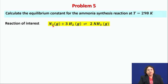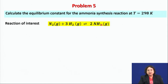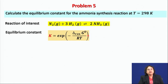The reaction is written as: 1 mole of nitrogen gas reacts with 3 moles of hydrogen gas to produce 2 moles of ammonia gas, with the entire reaction taking place in the gas phase.